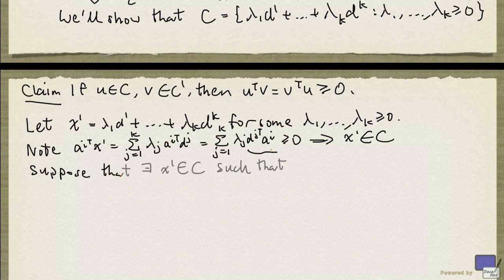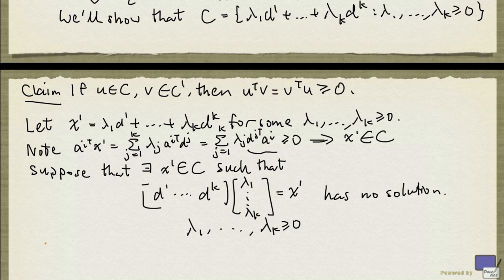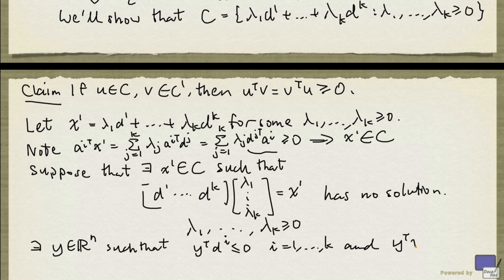Suppose that the following system has no solution. Then using a variant of the Farkas Lemma, we have a y in R^n such that y^T d^i ≤ 0 for i from 1 up to k.